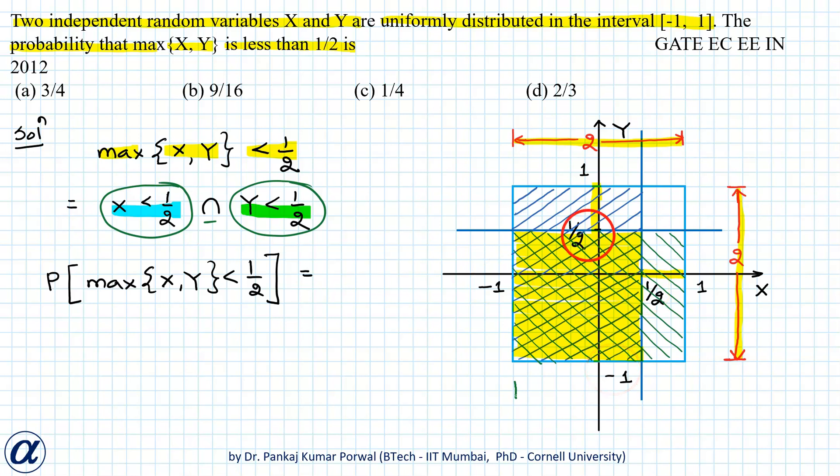Therefore, the sides of this yellow shaded area will be 3/2 unit by 3/2 units. This area equals (3/2 × 3/2) divided by the total area of (2 × 2).